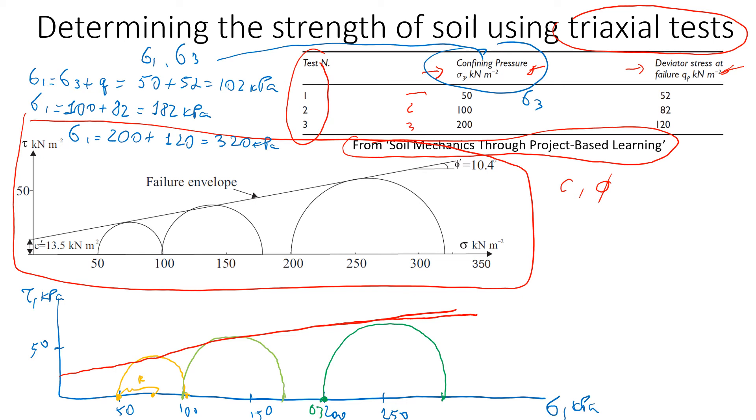Just look at this example—this is a really good example. Tangent means that if we draw a line from the center of the circle to the failure envelope line, this angle is going to be a right angle, so it will be 90 degrees.